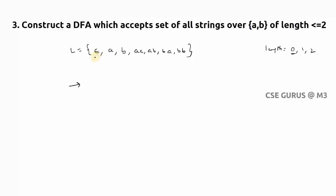So I'll take q0 as the initial state. Now I'll make this as a final state. Why? Because our language has epsilon. Now the next thing - it has to accept strings with length one.